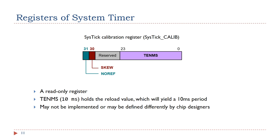The SysTick calibration register is a read-only register. It contains the value TENMS, which holds the reload value yielding a period of 10 milliseconds. However, many chips do not implement this feature, or have a different definition in this field. For example, STM32L4 defines this field as the reload value for 1 millisecond instead of 10 milliseconds.